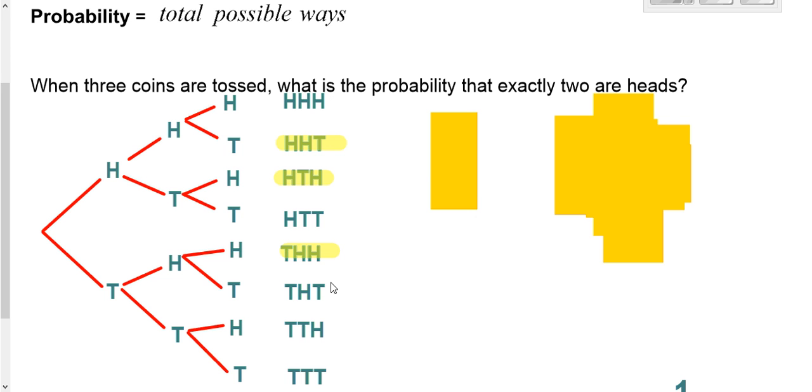So we have eight options for us, but three of them work for us. So our probability is three eighths.